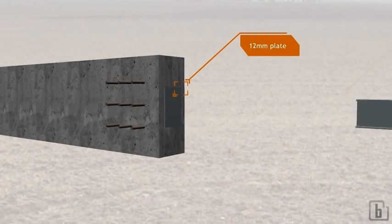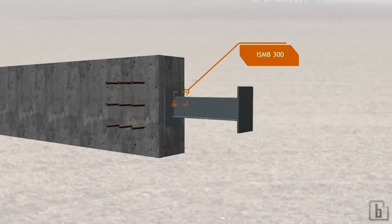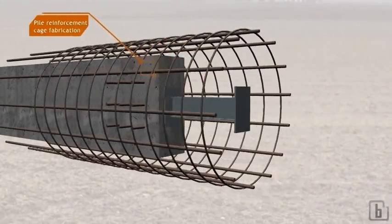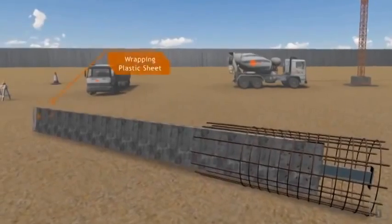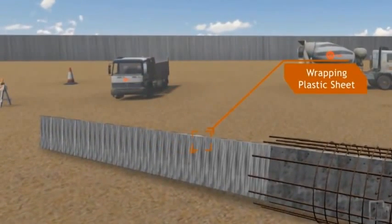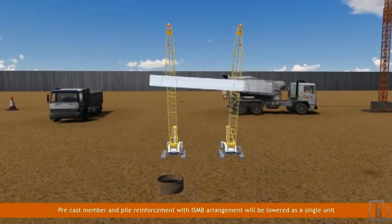The length of ISMB and pile reinforcement cage will be finalized after borehole termination depending upon site situation. Prior to lowering of precast member, it will be wrapped with plastic sheet to have a separation between column and lean concrete which will be poured later.